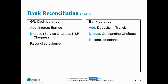On the general ledger side, you add things you don't know. You may not know about interest that was earned, or that you bounced a check and have an NSF charge. The bank also charged you service charges — maybe $1.50 per debit transaction or a monthly service fee — so we deduct these from your balance. If somebody gave you a check and it was NSF (non-sufficient funds), the money showed up as a deposit in your books, but the bank said the money wasn't there. At the end, the reconciled cash balance from the general ledger should equal the reconciled bank balance.